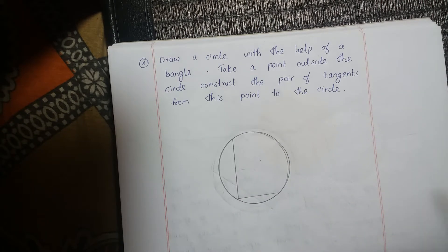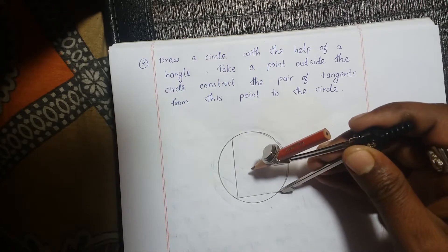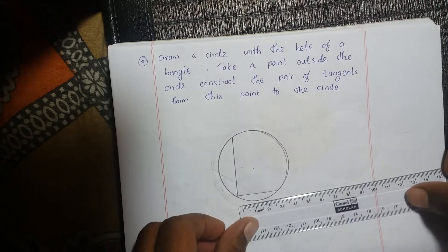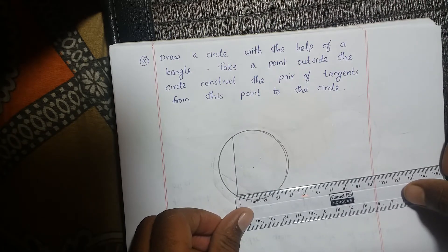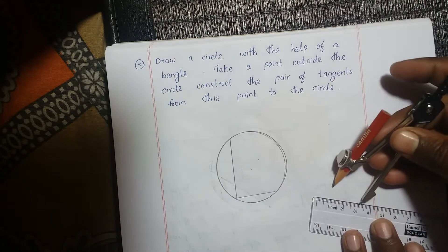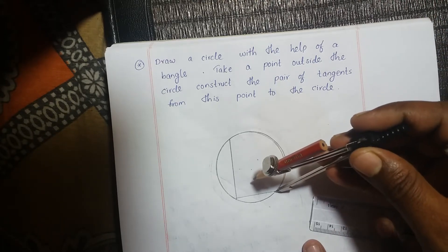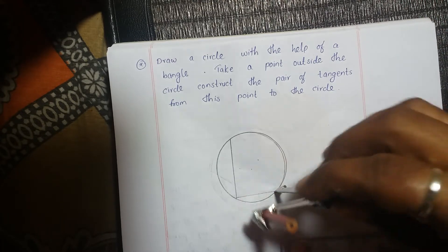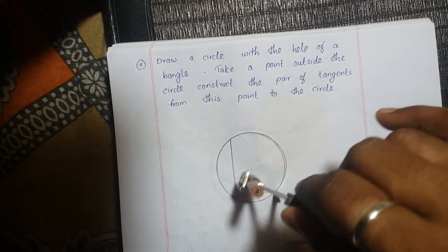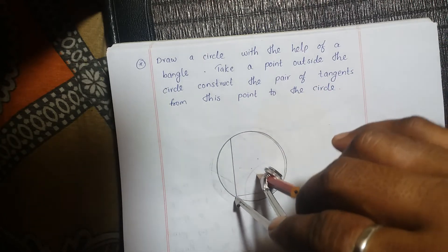Half of the chord is approximately 3 centimeters, so half is 1.5. You take more than half — approximately 2 centimeters or more — to draw one arc. Then put the compass needle on the other end and draw one more arc.